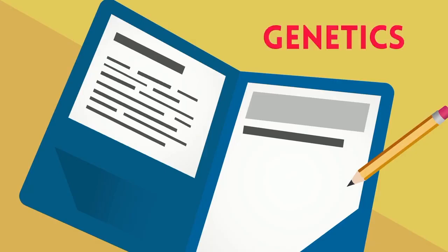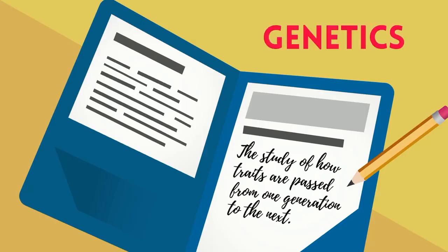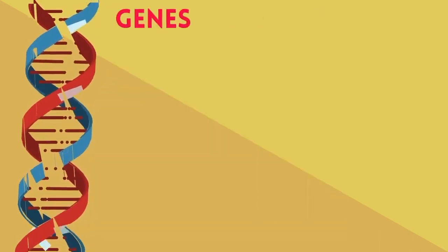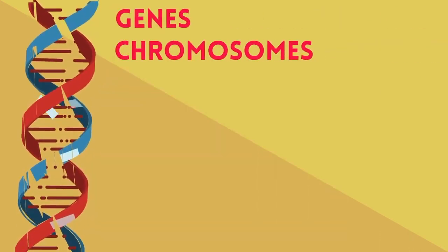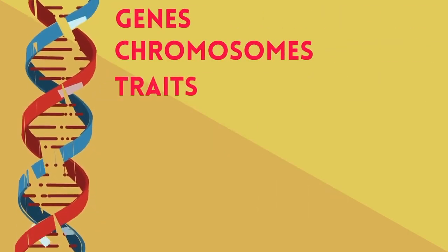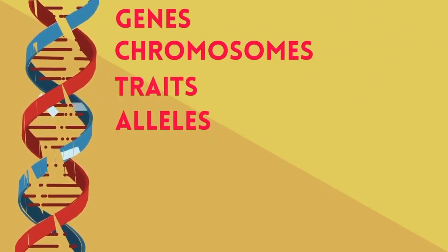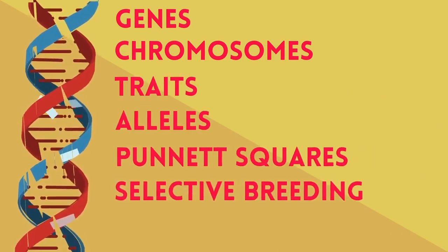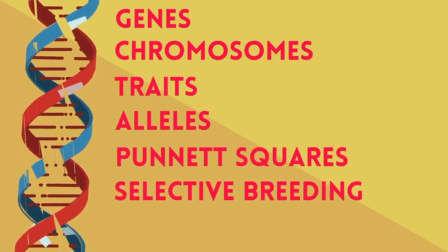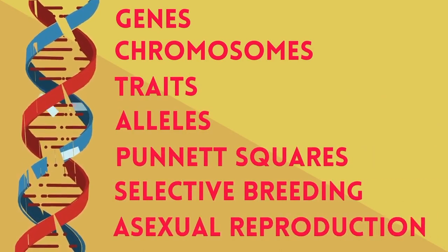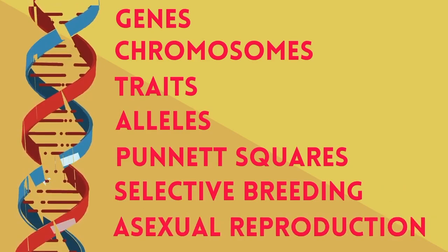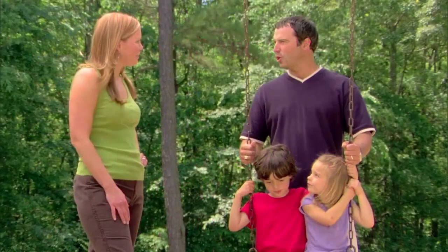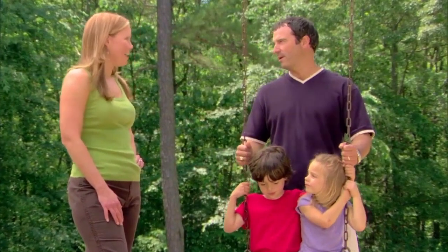Genetics is the study of how traits are passed from one generation to the next. Key topics include genes, chromosomes, traits, alleles, Punnett squares, selective breeding, and asexual reproduction. When two organisms reproduce, the offspring is slightly different.